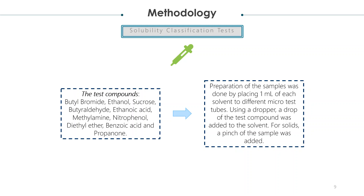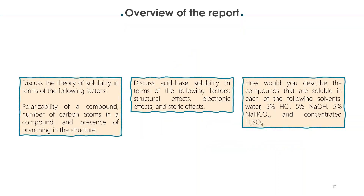The test compounds are as follows. Preparation of the samples was done by placing one ml of each solvent into different microtest tubes. Using a dropper, a drop of the test compound was added to the solvent. For solids, a pinch of the sample was added. For the overview, we are to discuss the theory of solubility in terms of the polarizability of a compound, the number of carbon atoms in a compound, and the presence of branching in the structure.